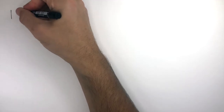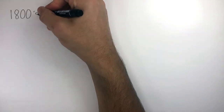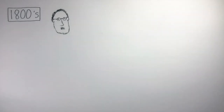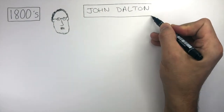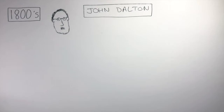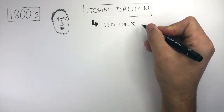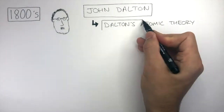Moving on to the 1800s, there was an English scientist called John Dalton. He had many ideas about the atom, proved by experiments at the time, and he came up with Dalton's atomic theory.